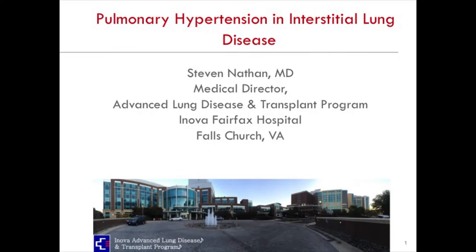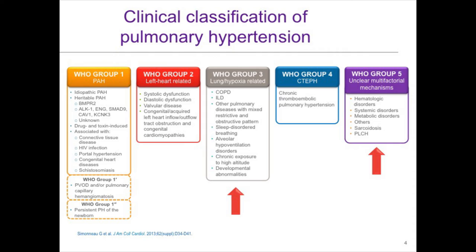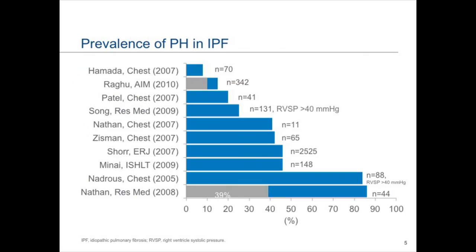My task is to talk about the treatment of pulmonary hypertension in interstitial lung disease. I'm going to focus mostly on group 3 in interstitial lung disease, although other conditions such as sarcoidosis are included under group 5. Much like IPAH is our prototype disease for group 1, so is IPF our prototype disease for group 3, at least with regards to the ILDs.